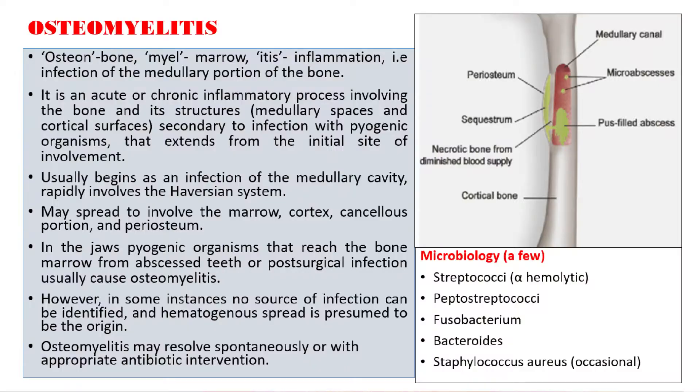Welcome back to the channel. In this video we will be talking about radiographic interpretation of osteomyelitis. Osteomyelitis is an inflammation of the bone. It usually arises from the medullary cavity and can then involve the Haversian system, the cortex, and also the periosteum.